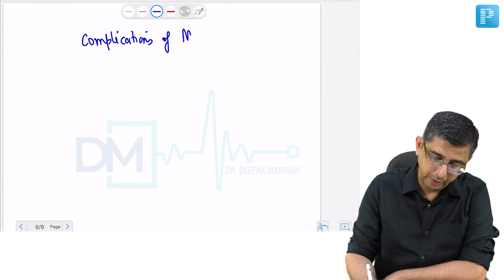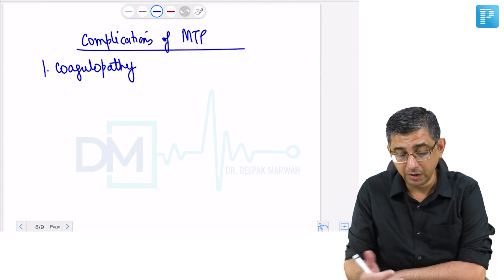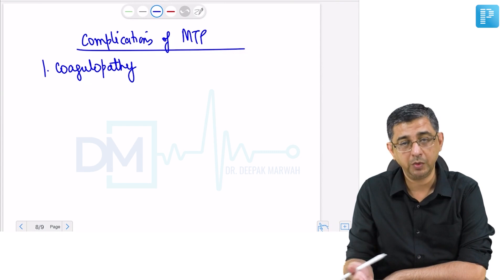We shall now discuss complications of Massive Transfusion Protocol or MTP. One important complication given in older books is coagulopathy. I have tried to explain that we are trying to minimize this coagulopathy, because trauma also causes coagulopathy.